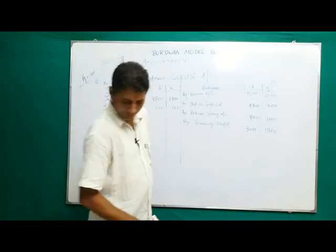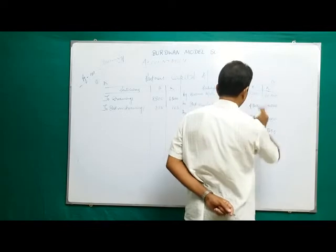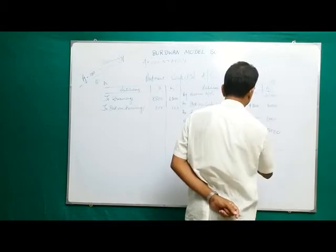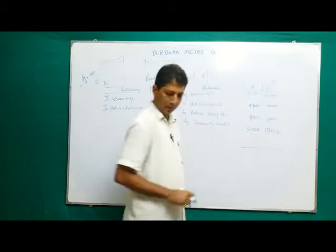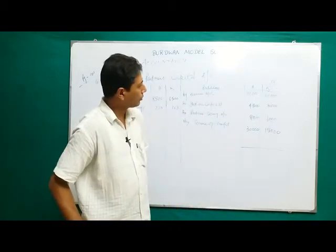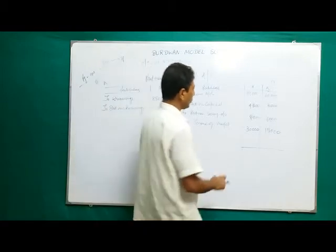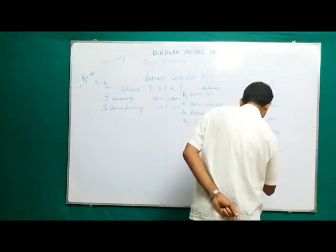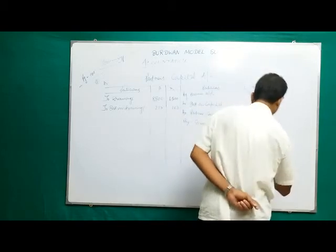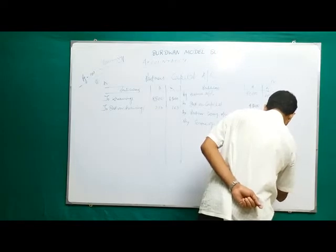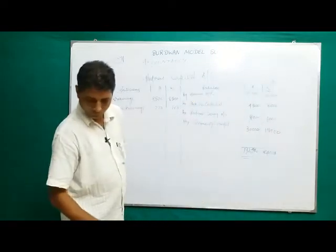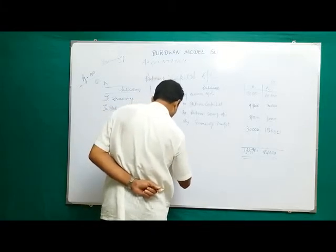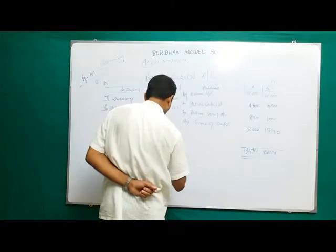The account is now complete. The totals come to 1,32,900 for Onuba and 84,000 for Kajol. Balance c/d is carried down accordingly.